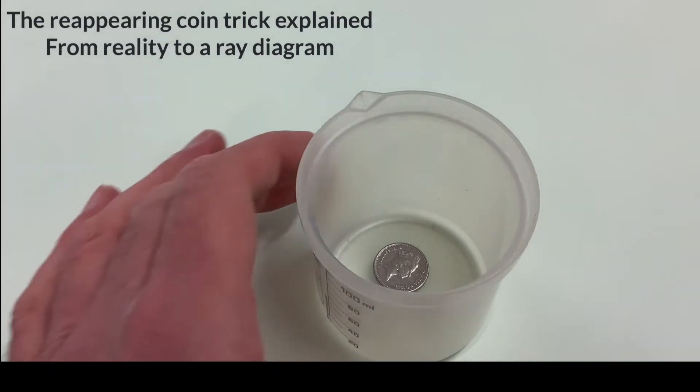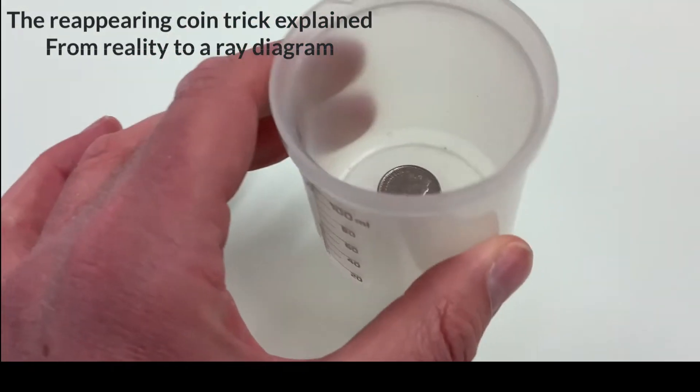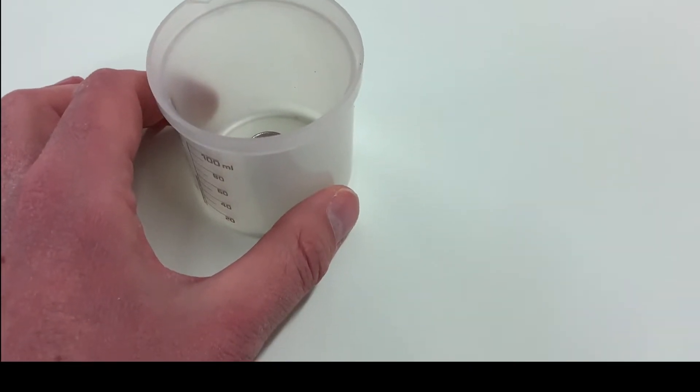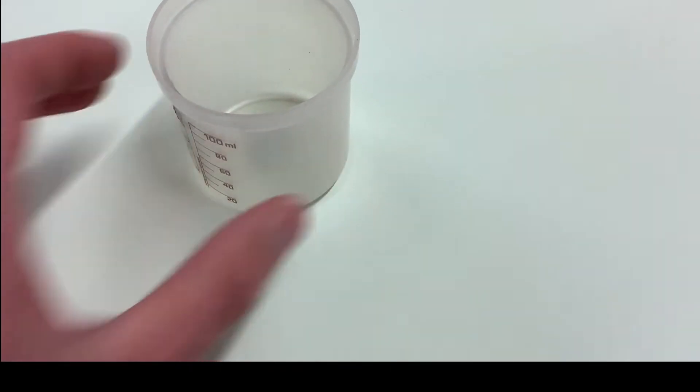You can easily try the reappearing coin trick for yourself. Just stick a coin in the bottom of an opaque beaker or mug, and then move it so you just can't see the coin.